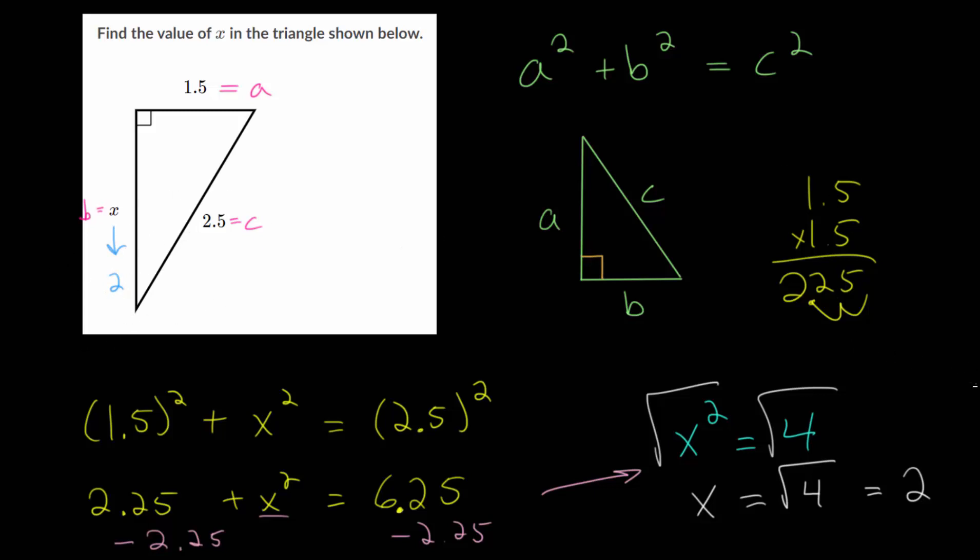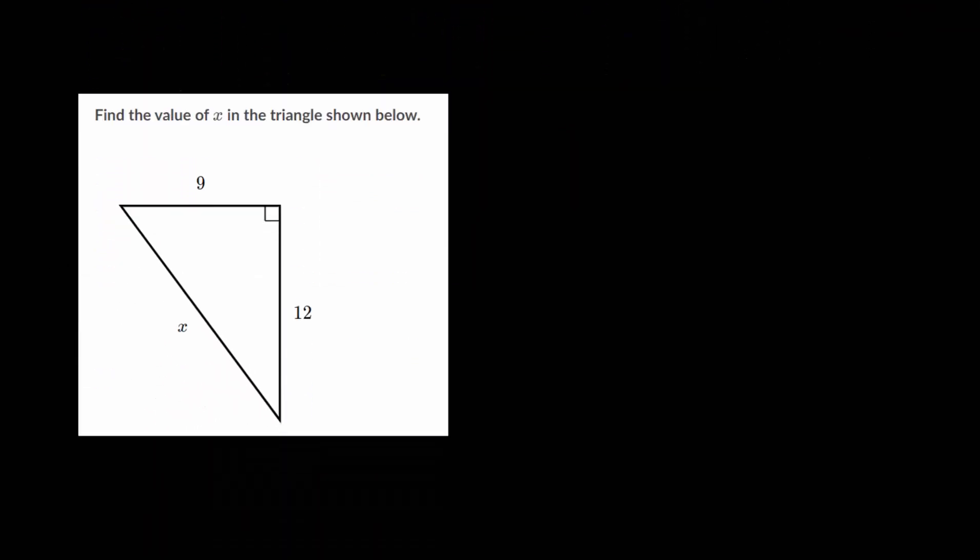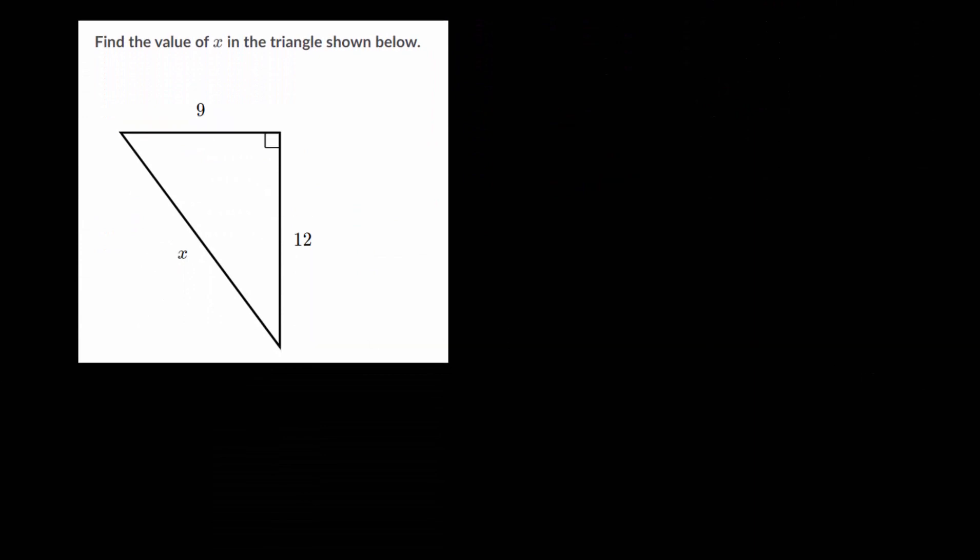So let's do one final problem here. And I'll again just write down our Pythagorean theorem. A squared plus B squared is C squared, where A and B, these are the legs. So maybe we can label this one B and this one A, it doesn't matter. And the long side, the hypotenuse, that is C. And you might notice this from the intro video, this is one of those Pythagorean triples.